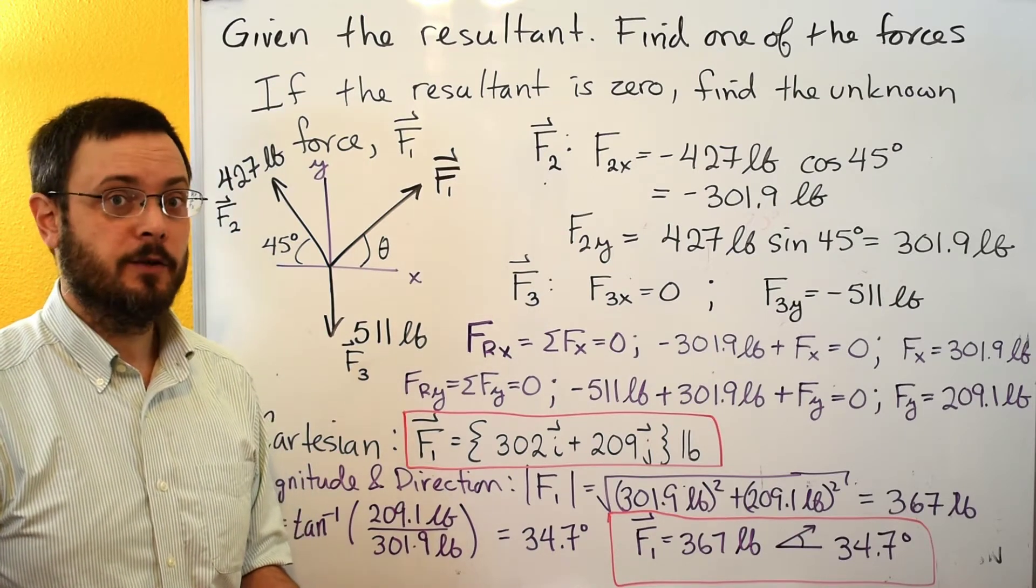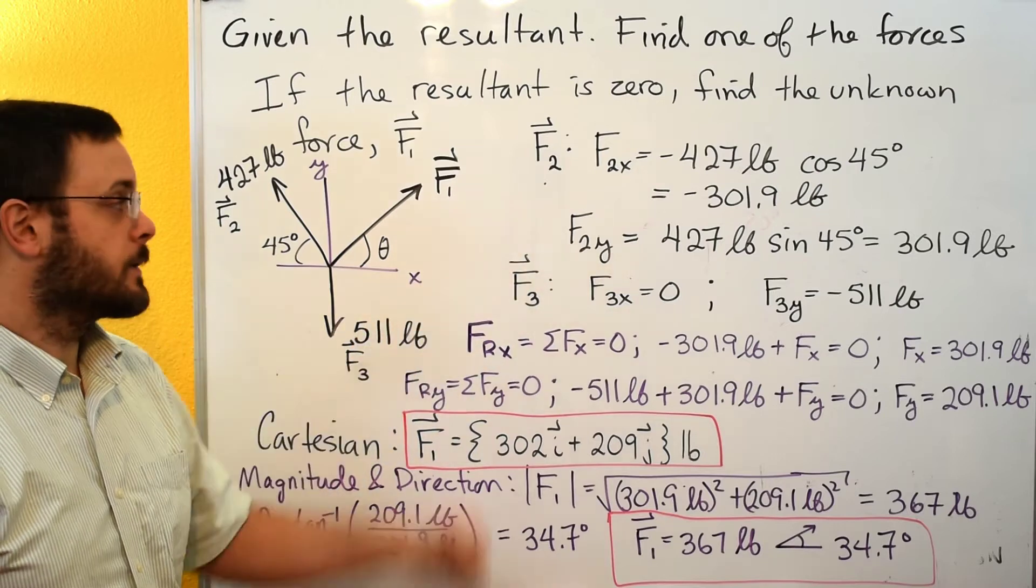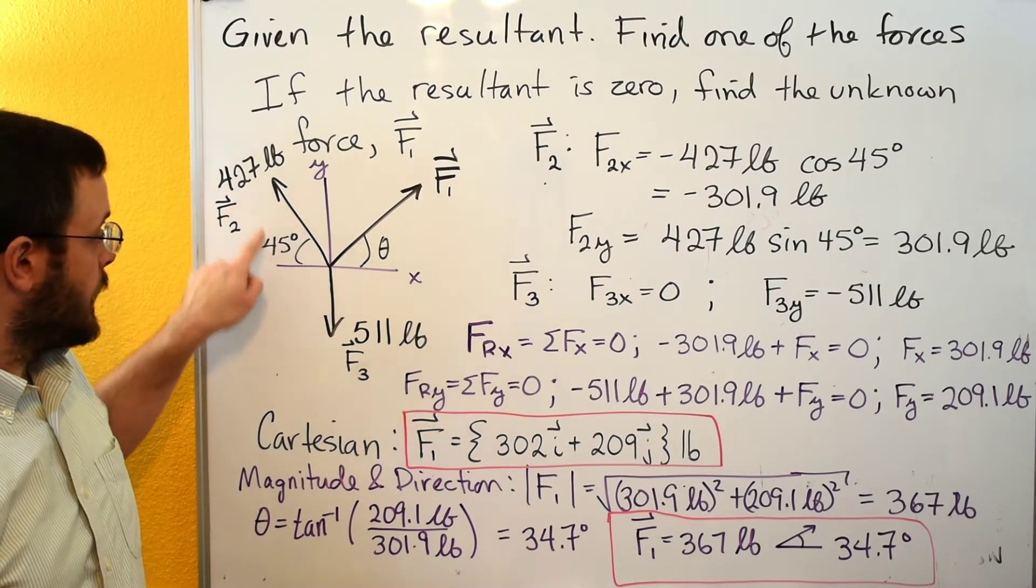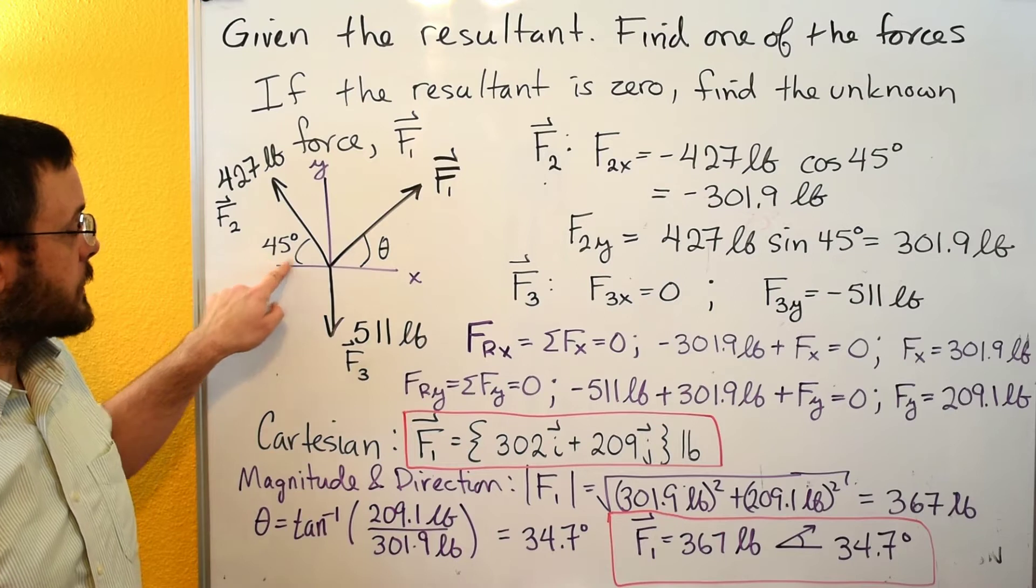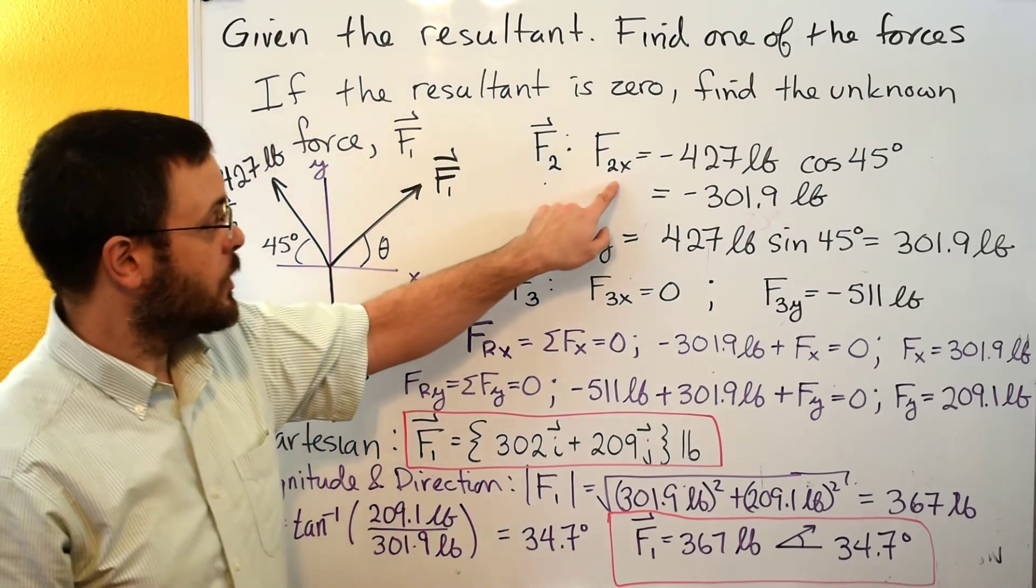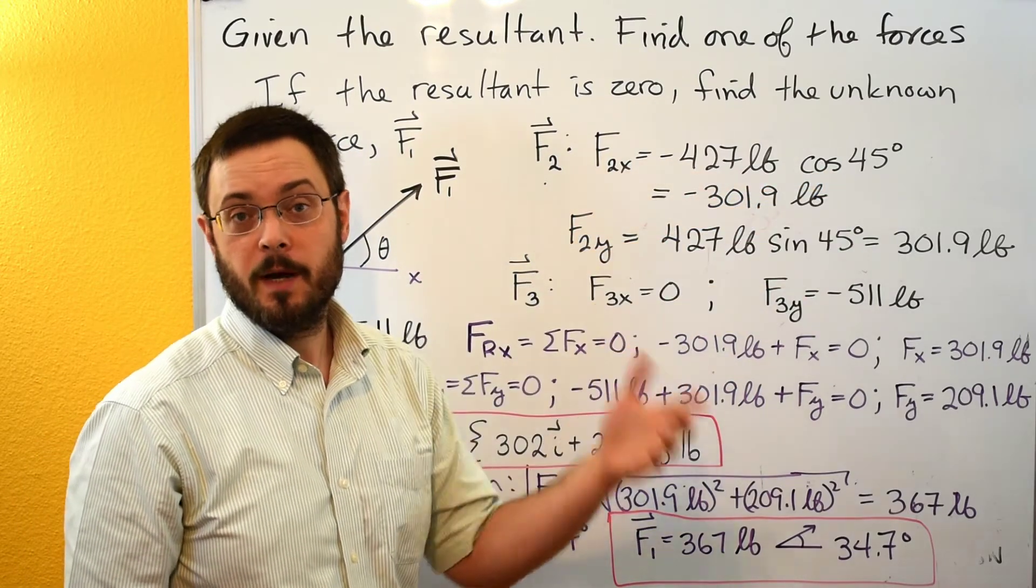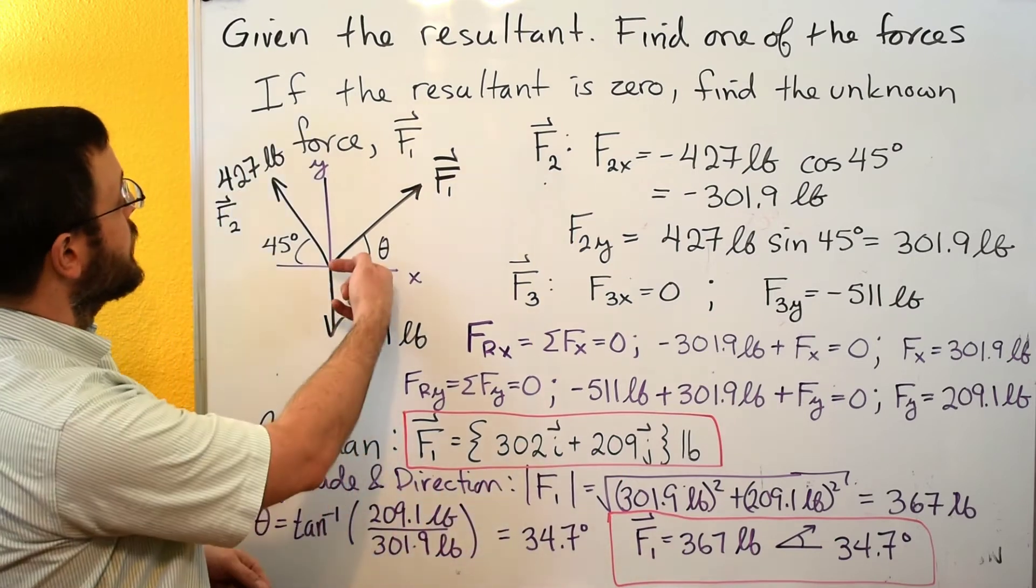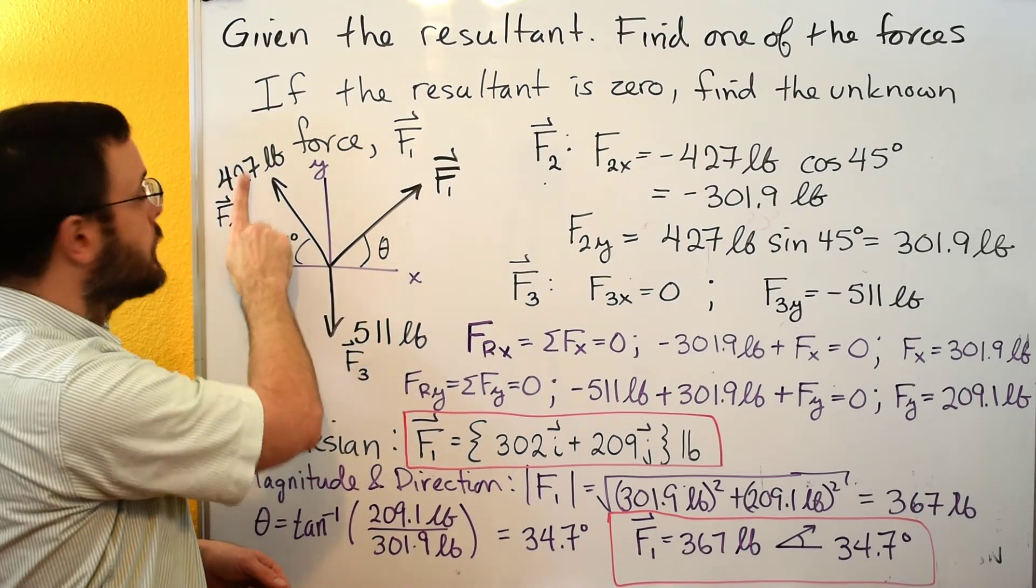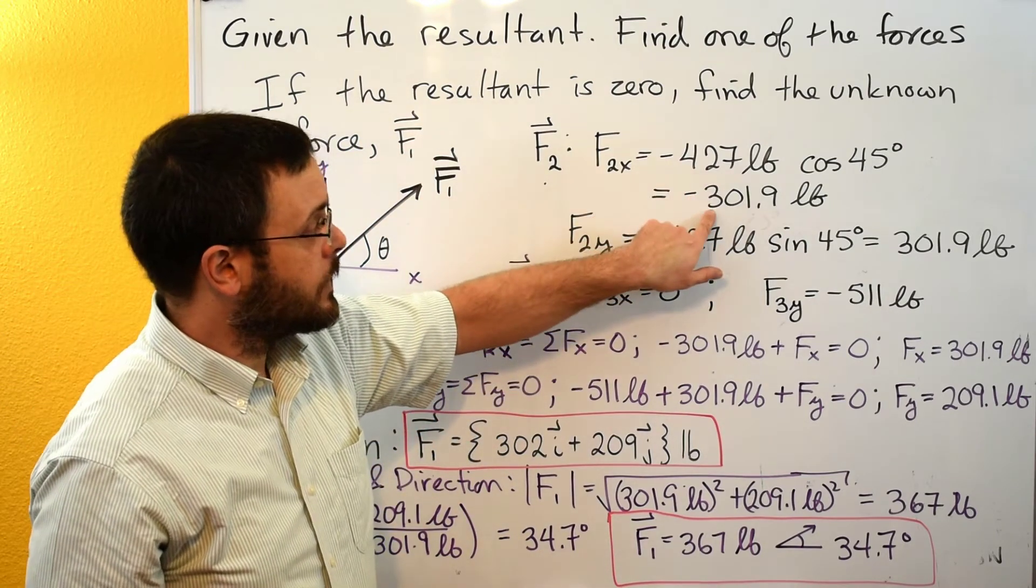The first part of this problem is going to look identical to any kind of find the resultant problem. The first part is that we just break the known vectors down into x and y components. So let's start with F2. F2 has a magnitude of 427 pounds. Looking at the 45, if we're looking at the x component, 45 touches the x-axis, so the x component's going to be adjacent to the 45. So F2x is equal to 427 pounds cosine of 45 degrees. We've got to go back and figure out positive and negative. Looking at this vector, it looks like it goes in the negative x direction, so we're going to put a negative sign in here, and then that gives us a negative 302 pounds for the x component.